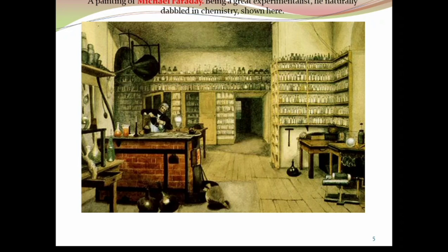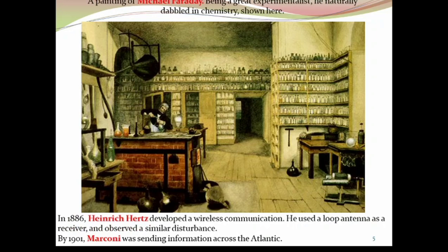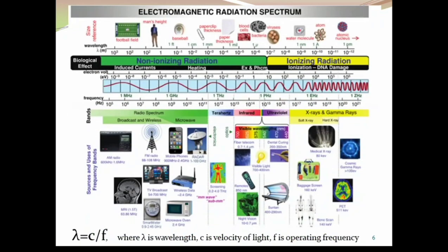This is a picture of Michael Faraday doing an experiment in his lab. Now we will discuss about electromagnetic radio spectra. In this picture, the first part is about the size reference of the wavelength. The first one is a football field — a very large space. When we compare to the other end, it is an atomic nucleus, which is a very small, tiny particle.